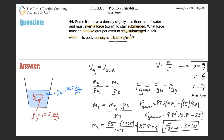This result makes sense — the grouper is less dense than the salt water, so it must actively exert a downward force to stay submerged. Thanks for tuning in, please remember to subscribe, and we'll see you next time!